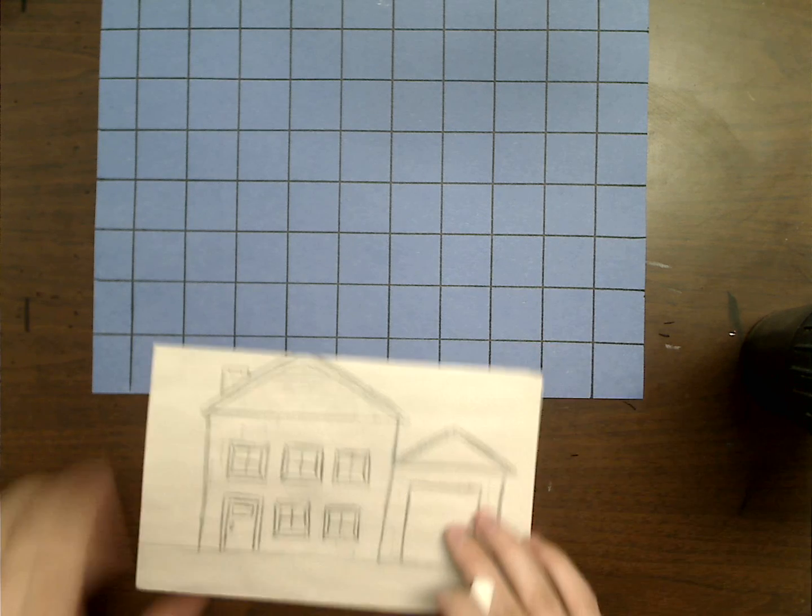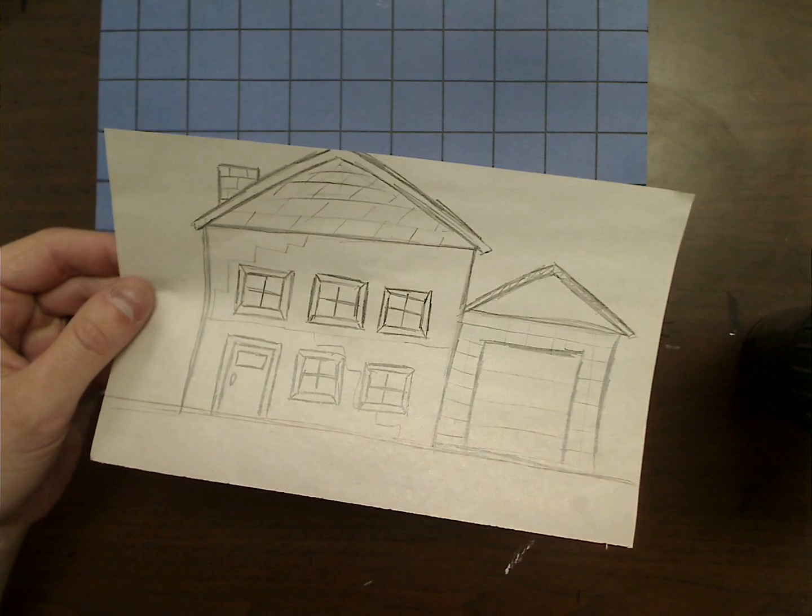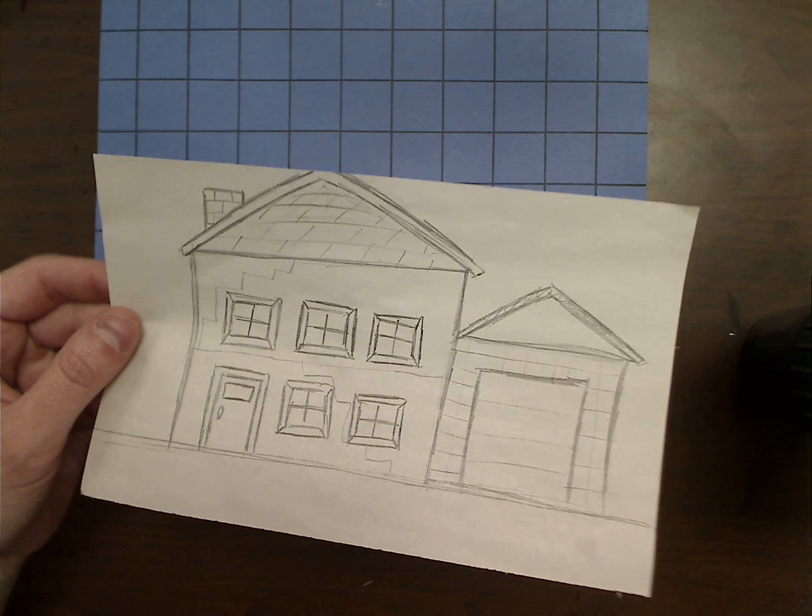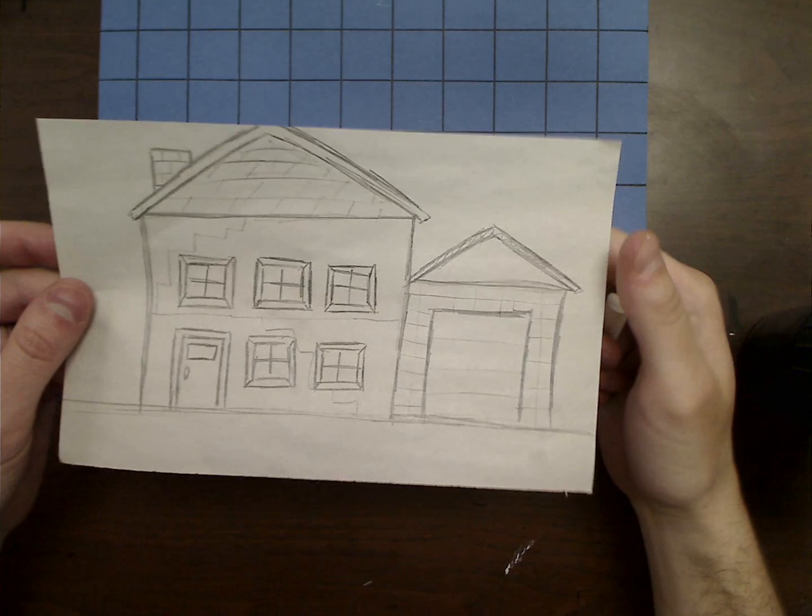As you finish your drawing of your architecture and have all your details done, I want you to go through and trace your details with a sharpie. So we'll trace all of our lines with a sharpie.